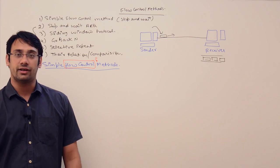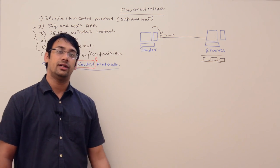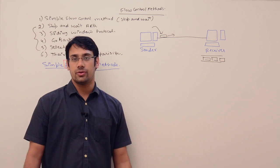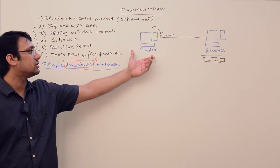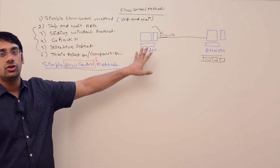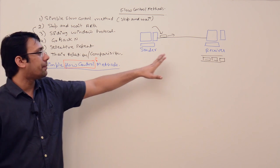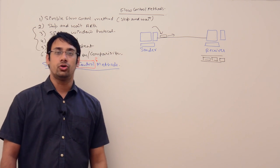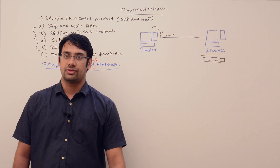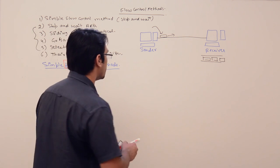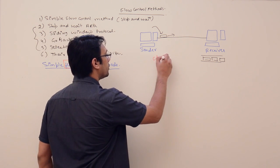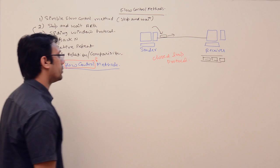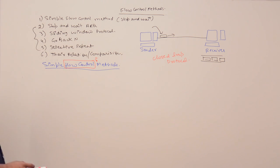If the sender is sending data at a very slow rate, most of the time the receiver is sitting idle — that is also not beneficial. So flow control methods help us determine the pace of this flow. This complete setup is called a closed loop protocol, meaning the sender should always follow the receiver.